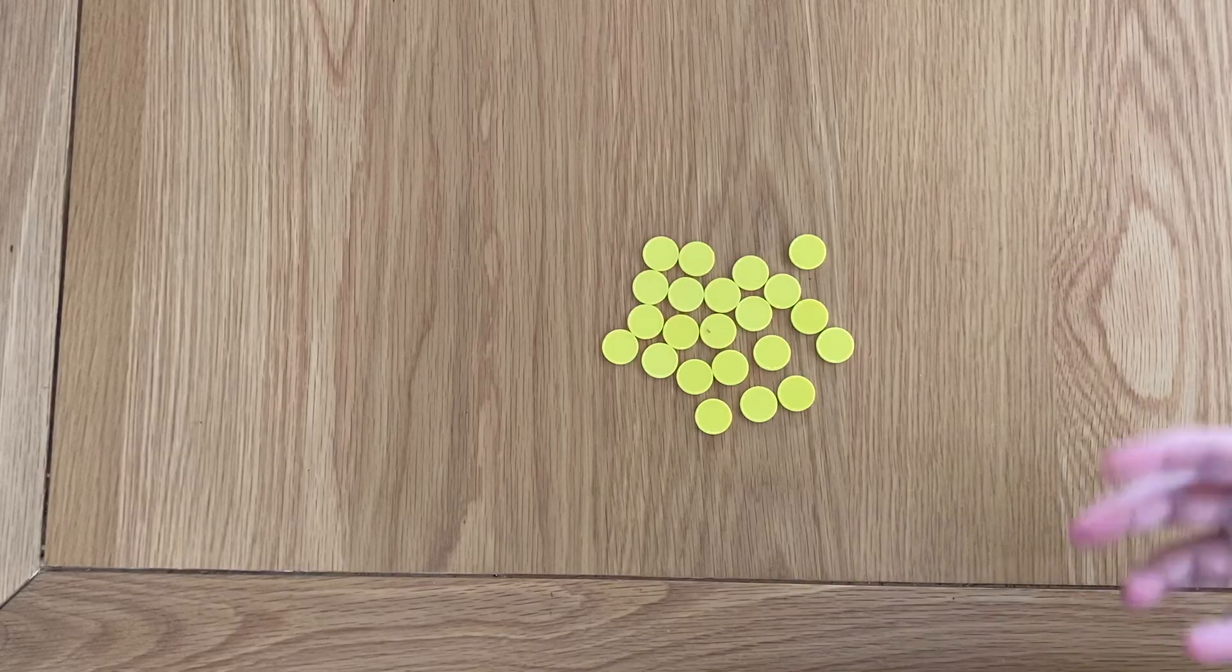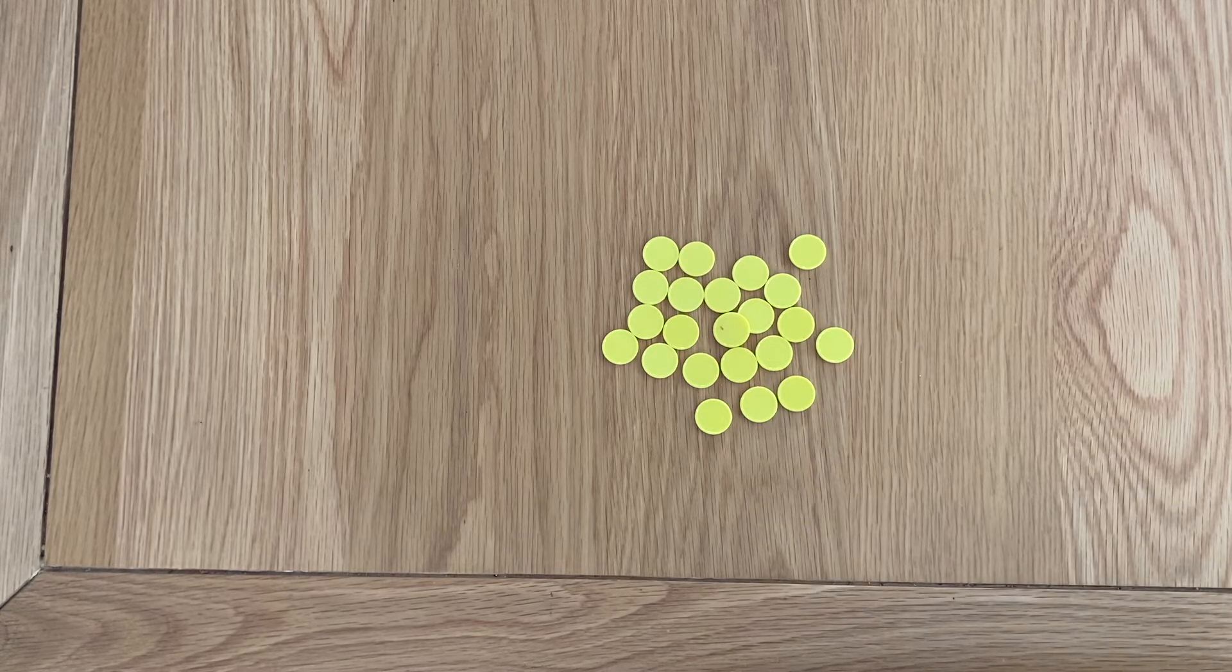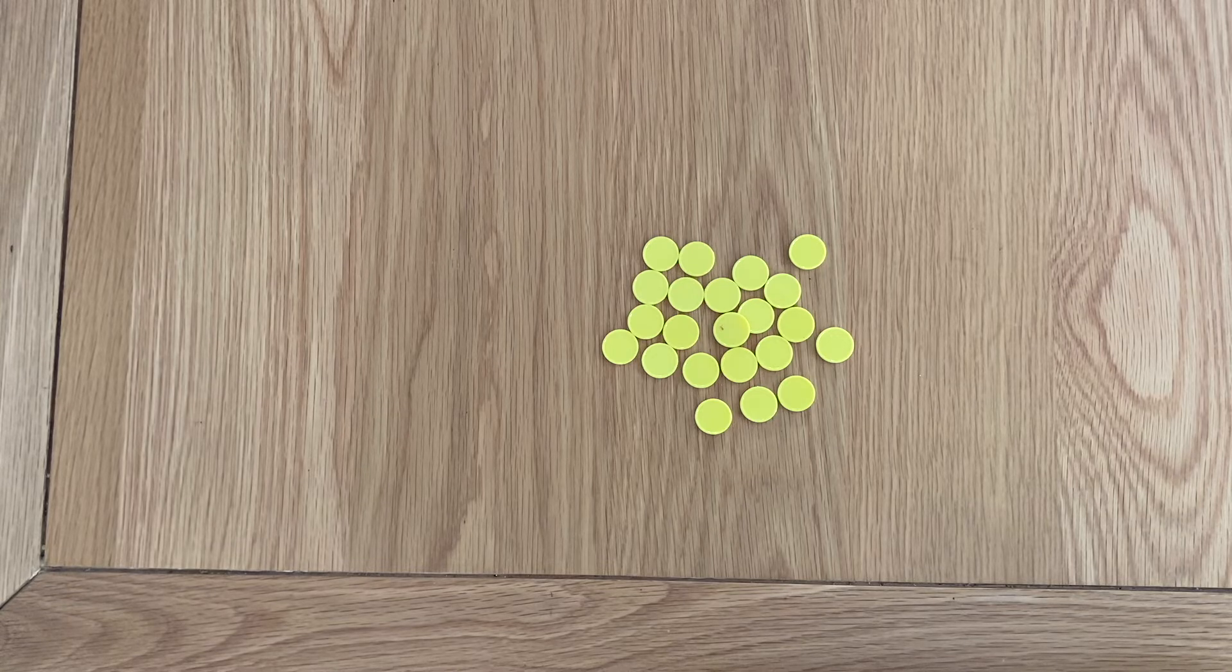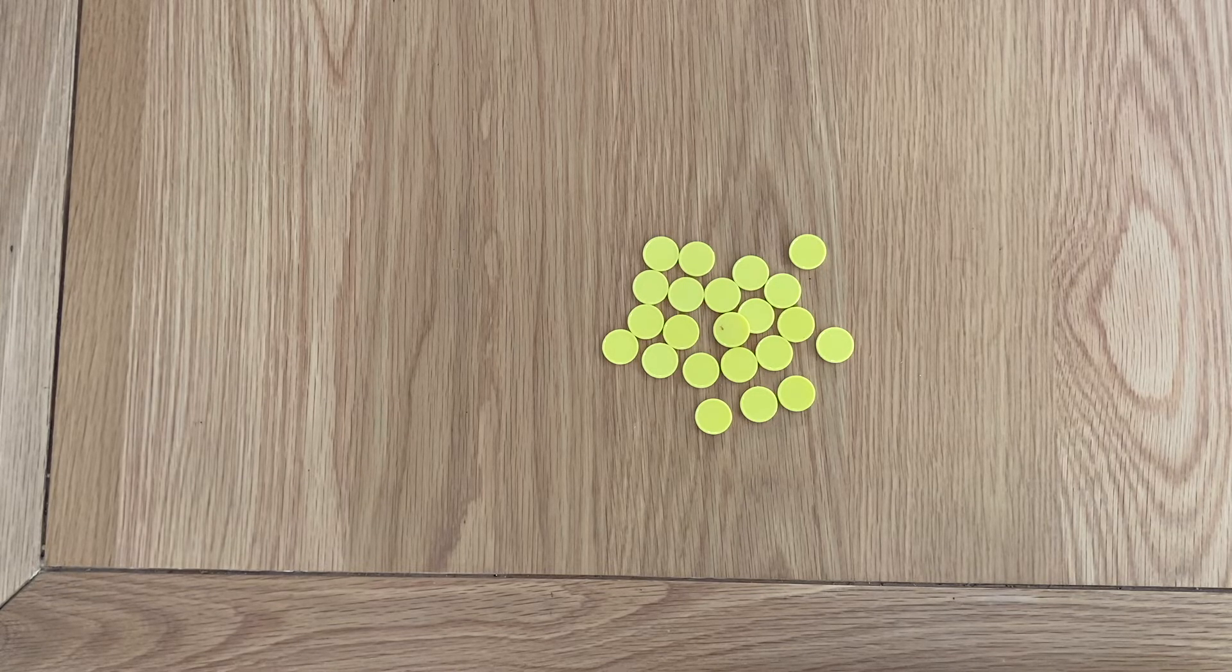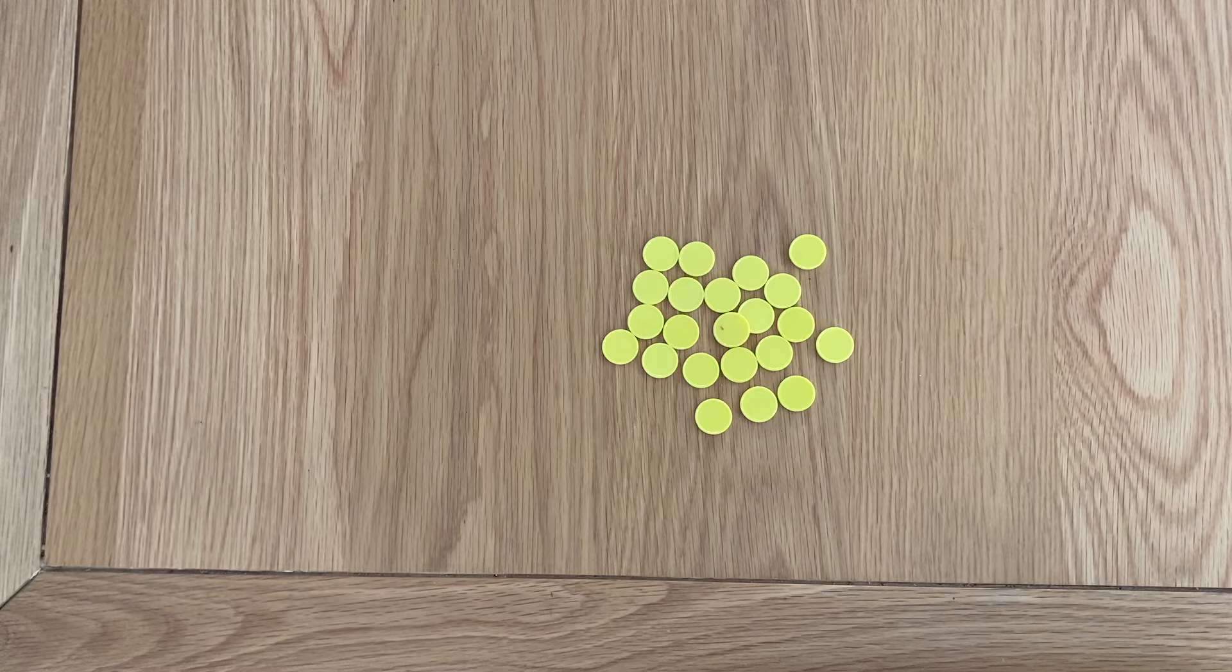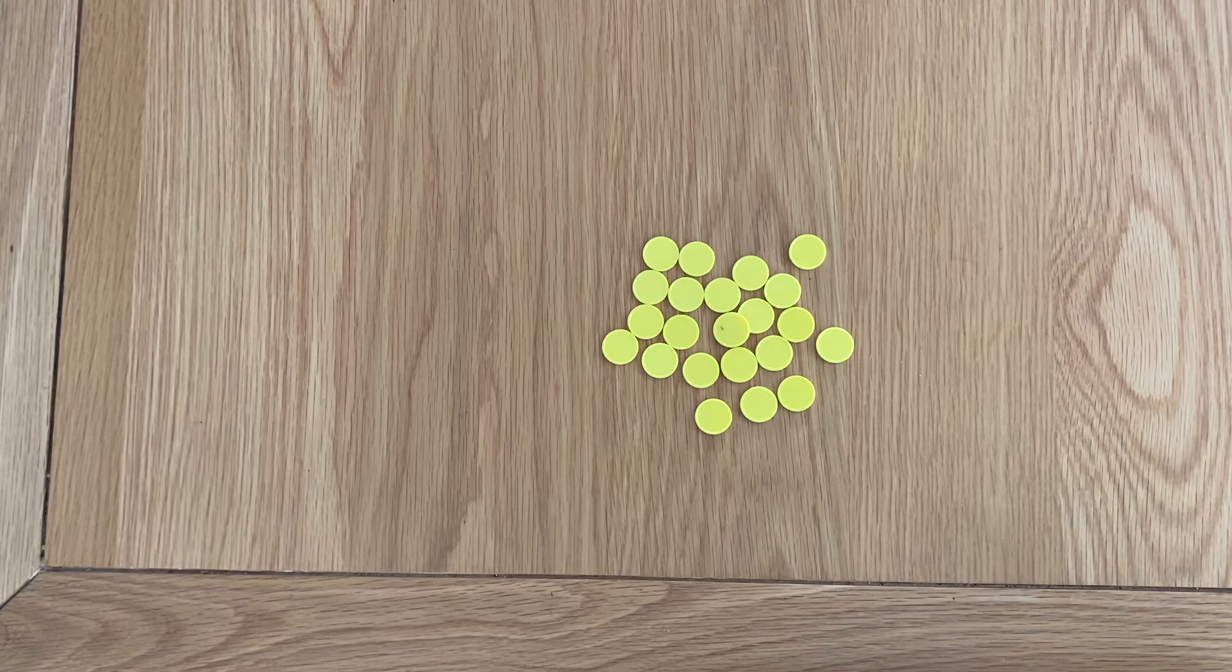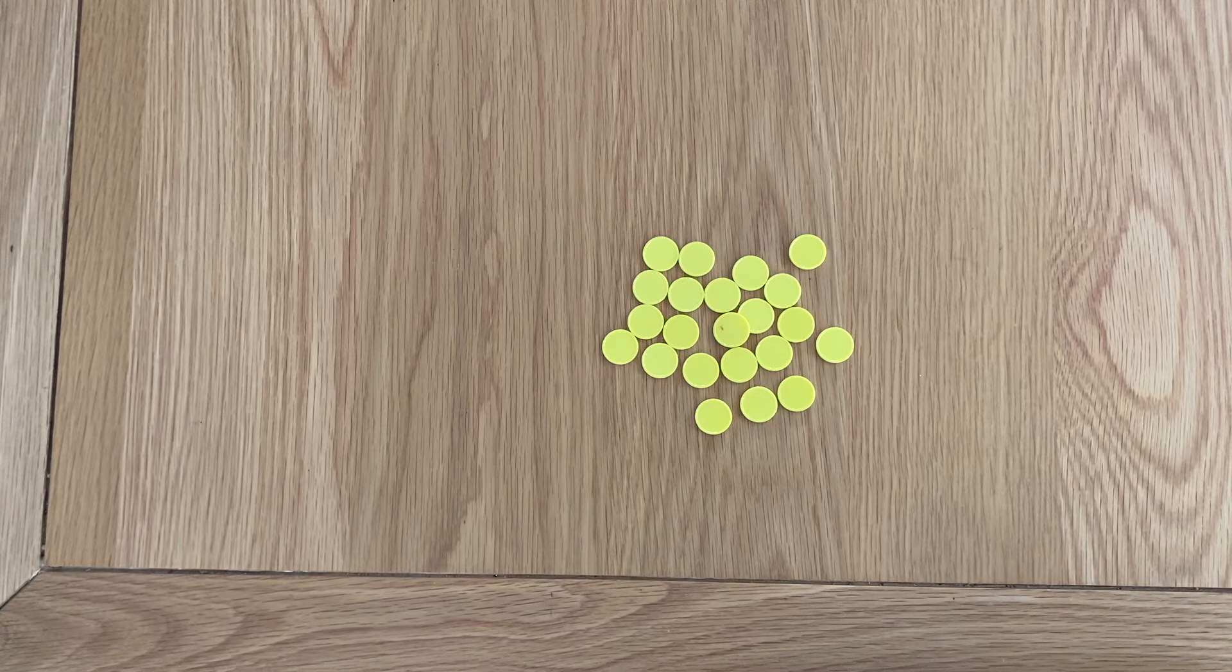As time goes on hopefully students are going to get better at estimating the collections of counters because estimating is such an important part of our everyday life as adults. We use it to estimate how much something is going to cost, what the discount off a certain item is that we want to purchase. So we really want to get kids to get good at estimating even in the early years.